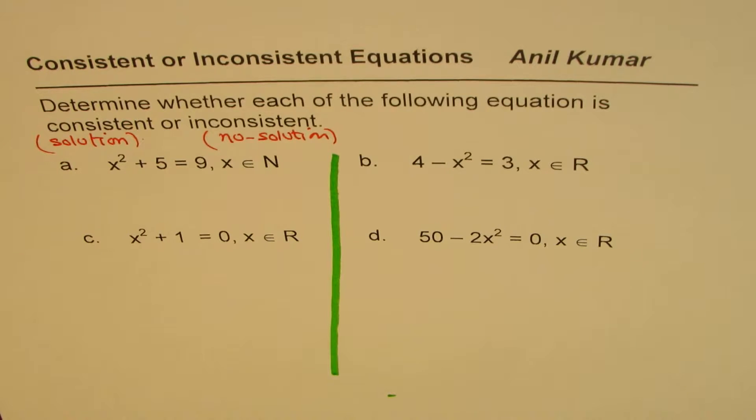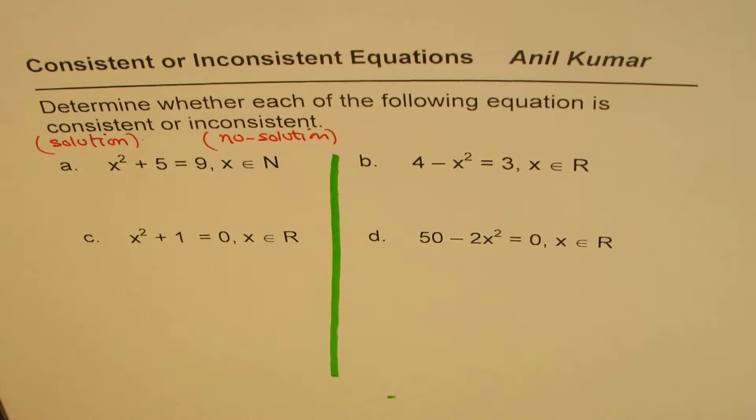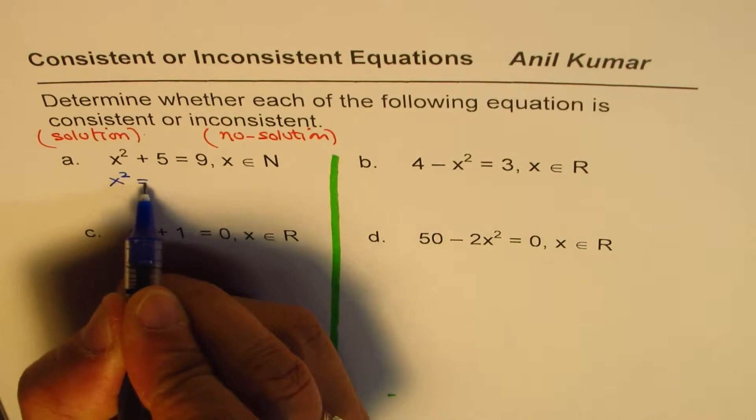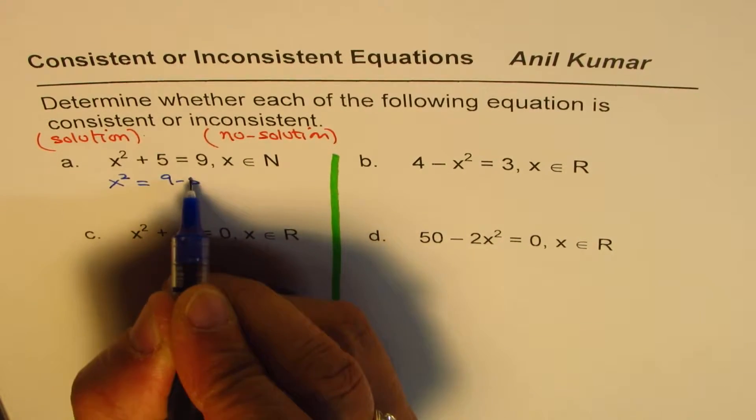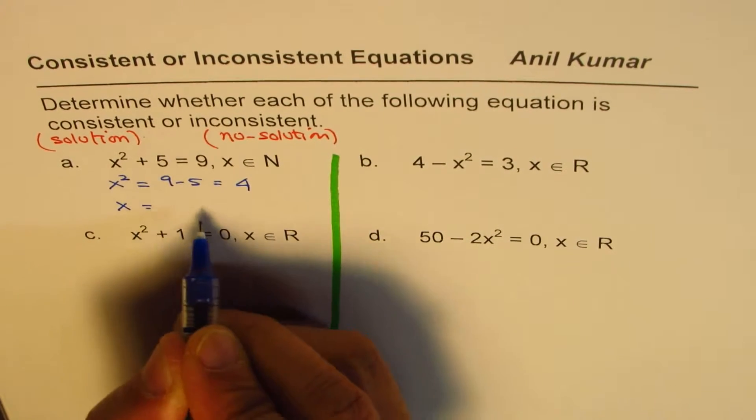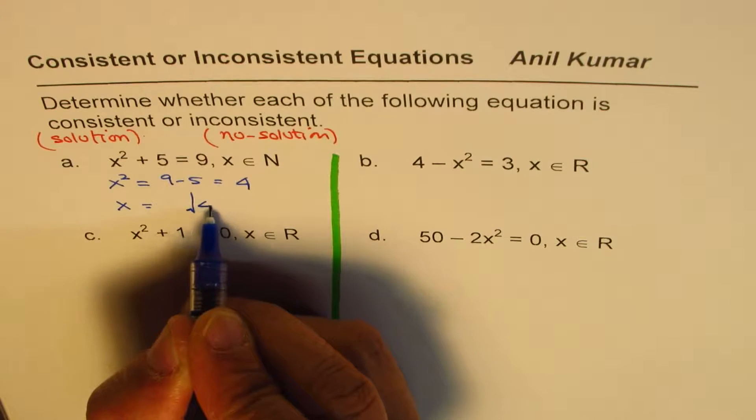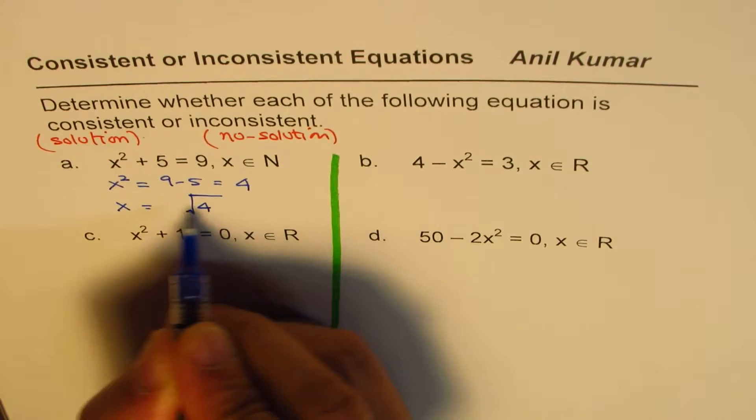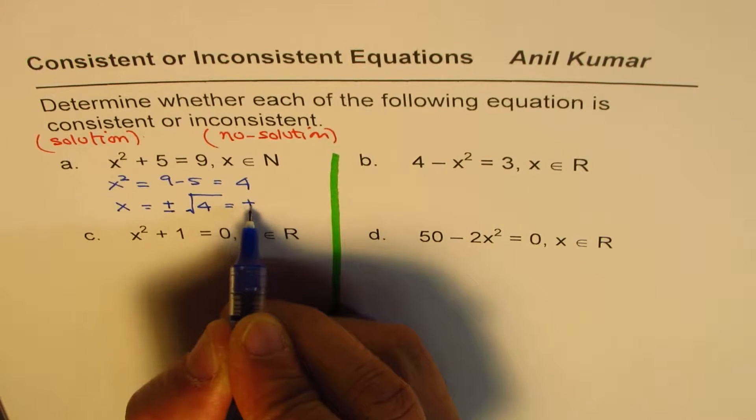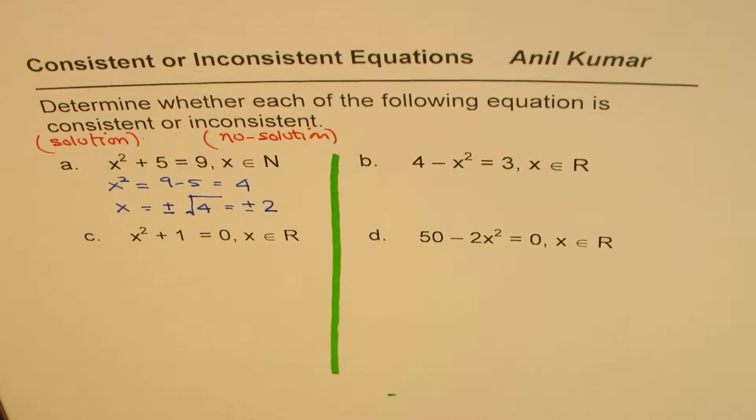The first one is x squared plus 5 equals to 9. So when you rearrange, what do you get? You get x squared equals to 9 minus 5, which is 4. So what is x equals to? x will be equals to square root of 4. And whenever you do square root, you get two answers, plus and minus. So that gives us plus and minus 2 as our solution.